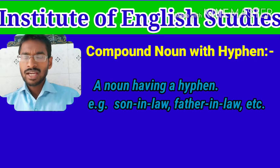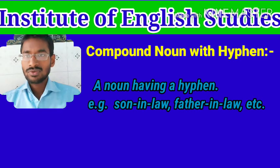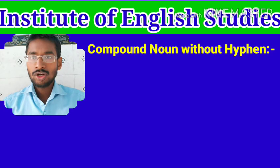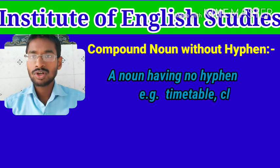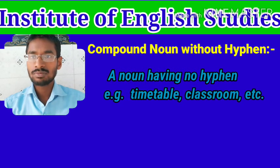Compound noun with hyphen: a noun having a hyphen is called a compound noun with hyphen. Compound noun without hyphen: a noun without a hyphen is called a compound noun without hyphen. For example: timetable, classroom, etc.